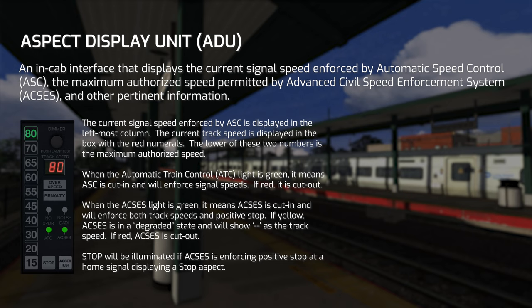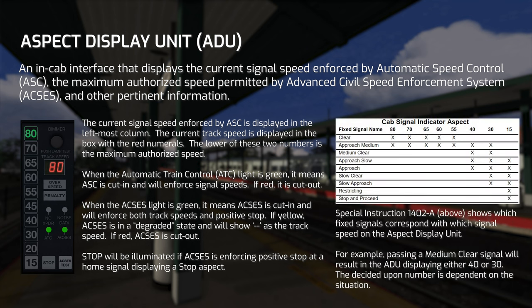In a degraded state, ACCESS will show the track speed as two dashes because it doesn't know a number — the system is enabled and cut in, just in a degraded state. You also have the stop light at the very bottom of the ADU, which will illuminate if ACCESS is enforcing a positive stop at a stop signal. Special Instruction 1402-A on the right-hand side shows which fixed signals correspond to which numbers on the ADU. For example, passing a medium-clear wayside signal means only 40 or 30 should ever show up.